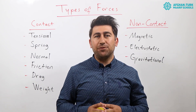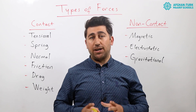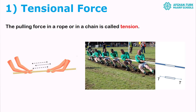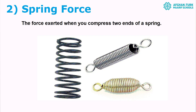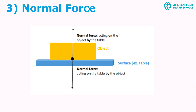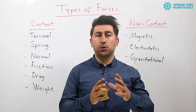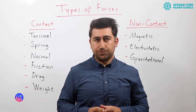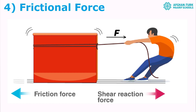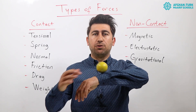Contact forces can be classified according to six different types. Tensional force, such as a rope being pulled tight — the tension on the rope is a tensional force. Spring force, such as the force exerted when you compress two ends of a spring. Normal reaction force, where one body provides a reaction against a force exerted upon it, such as a ball bouncing or a book on a table. Friction force, the force exerted when an object moves across another, such as a ball rolling over a floor.